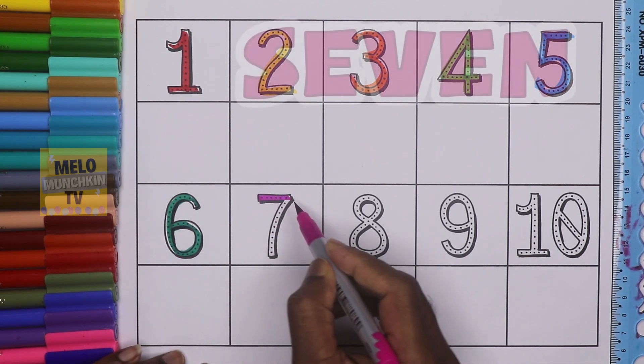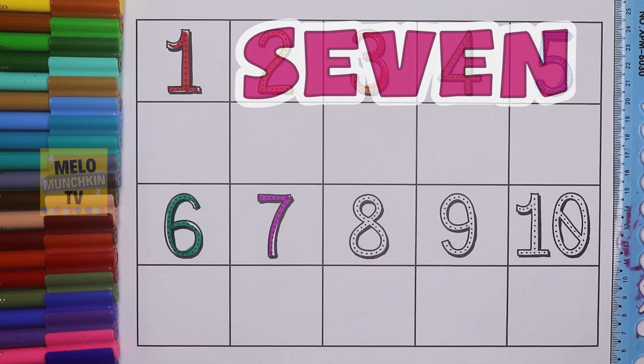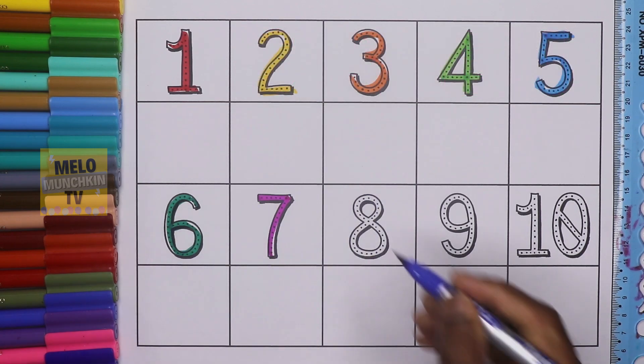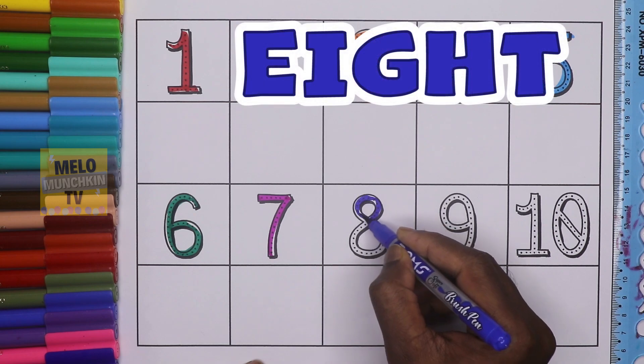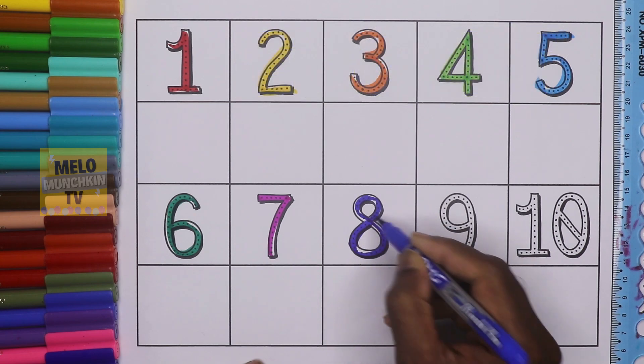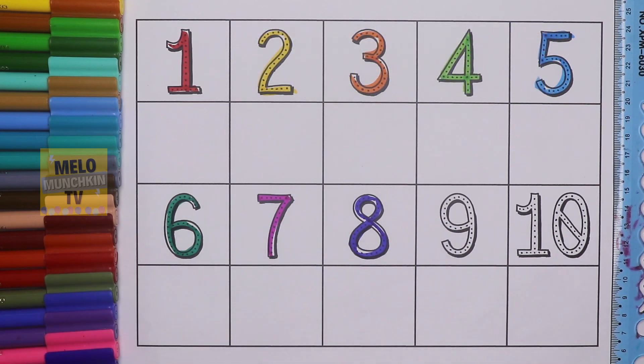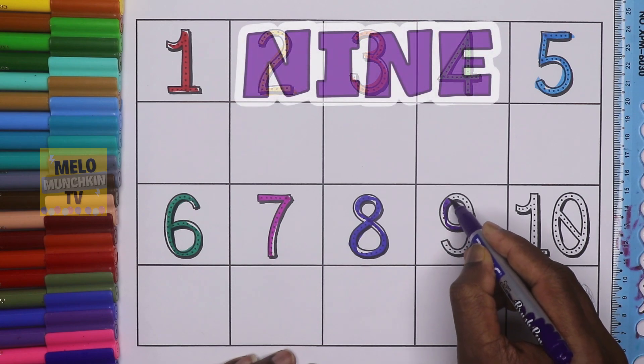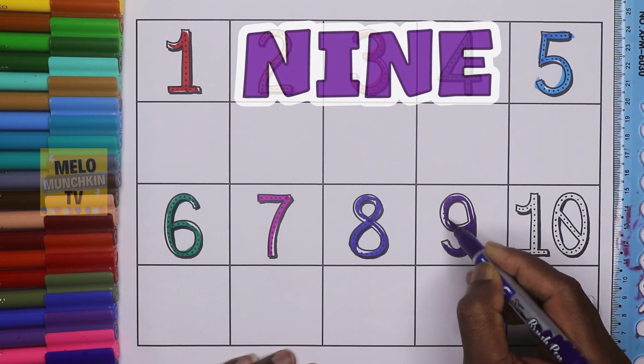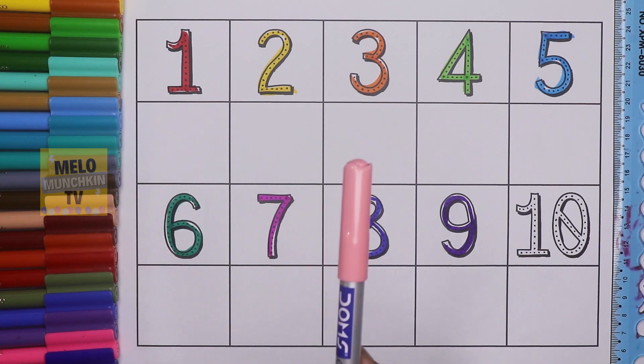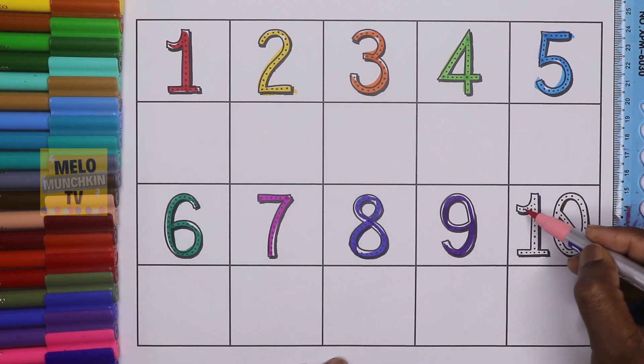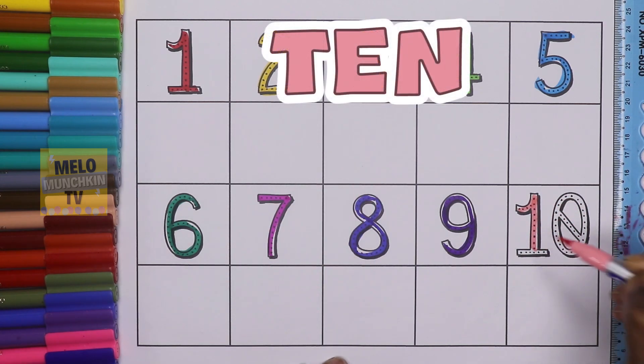Dark pink color, seven: S-E-V-E-N, seven. Dark blue color, eight: E-I-G-H-T, eight. Purple color, nine: N-I-N-E, nine. Light pink color, ten: T-E-N, ten.